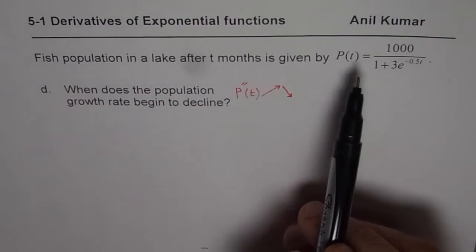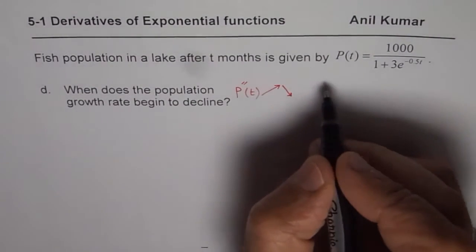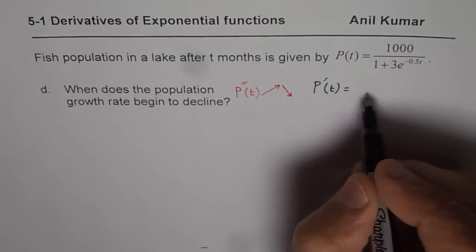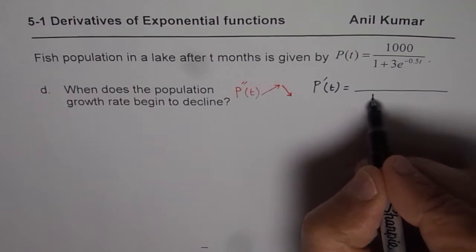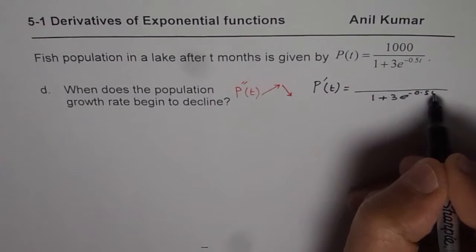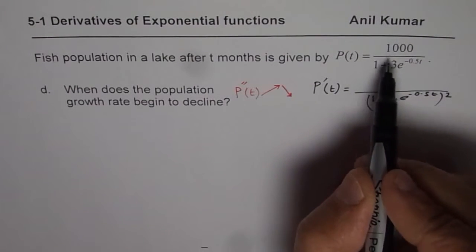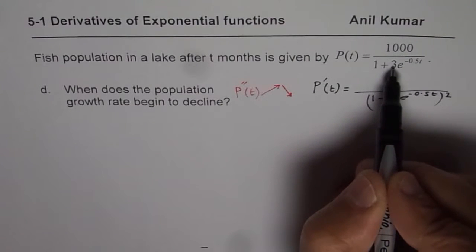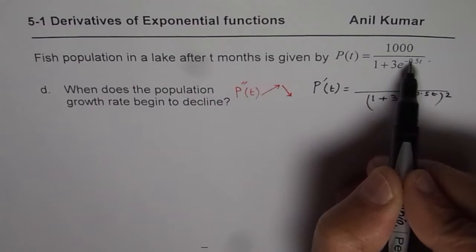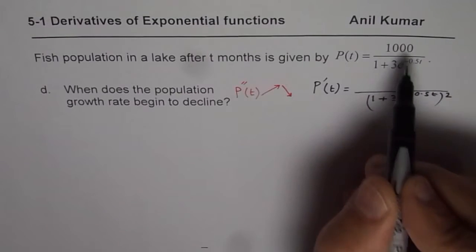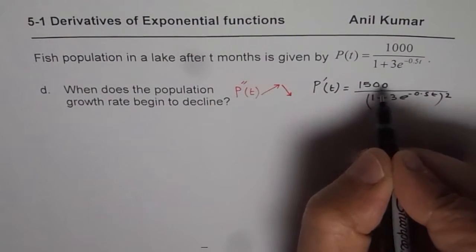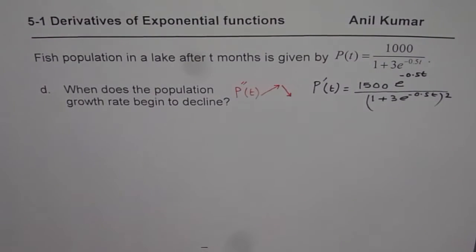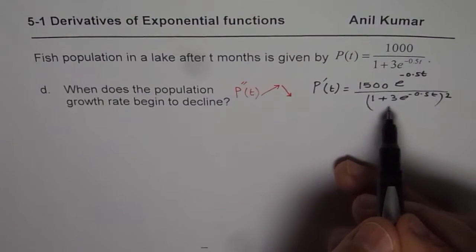In the previous video you saw how to find the derivative of this function. Let me write that derivative and we will begin from there. The derivative of this function was simplified so that the denominator was the square of 1 plus 3 e to the power of minus 0.5 t, and the numerator was minus 1000 times the derivative of that part. 1000 times 3 times 0.5 gives 1500, so the numerator was 1500 e to the power of minus 0.5 t. You can also look into the link for complete details.